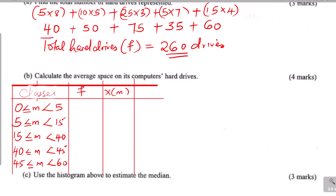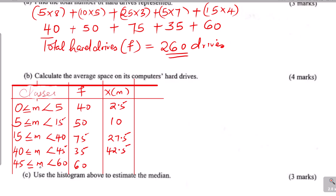The midpoints are calculated as follows: for 0 to 5, midpoint = (0+5)/2 = 2.5; for 5 to 15, midpoint = (5+15)/2 = 10; for 15 to 40, midpoint = (15+40)/2 = 27.5; for 40 to 45, midpoint = (40+45)/2 = 42.5; for 45 to 60, midpoint = (45+60)/2 = 52.5.